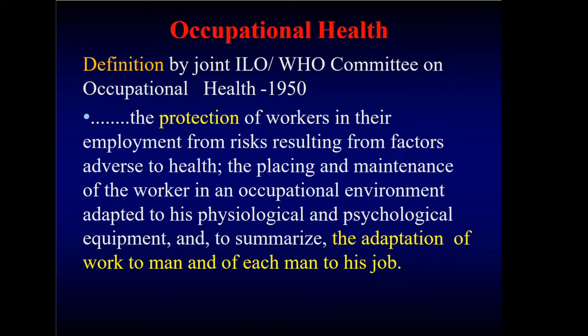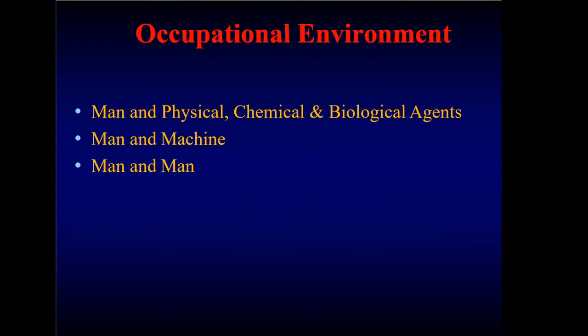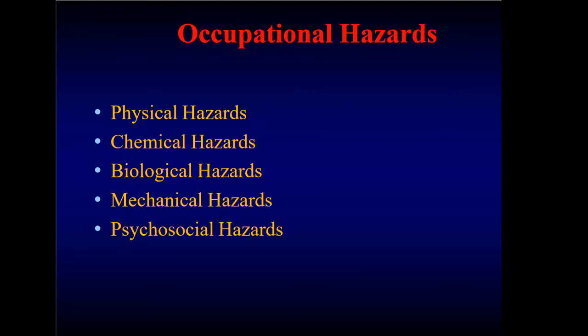When considering occupational health, we must look at the occupational environment: what are the occupational hazards, what are the occupational diseases, and the prevention. In the occupational environment, we look at man and his interactions with physical, chemical, and biological agents, man and the machine, and man and man. Problems with all three can arise, including many psychological problems from person-to-person interaction.